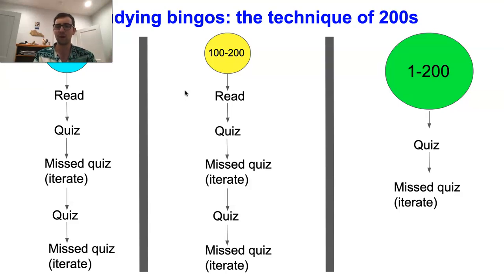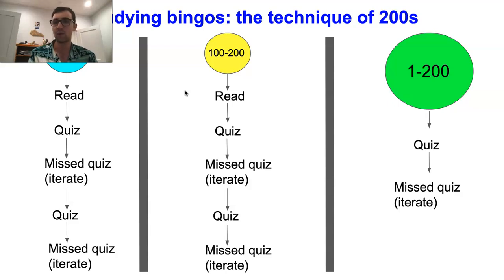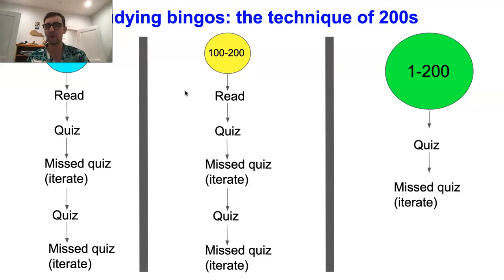I don't recommend more than 200 words at once because trying to study more new words than this is just too much for your brain to take in at the same time, and you don't end up absorbing the words as well. If you try this and find that 200 at once is too much, it can very easily be scaled down to 100 words or even 50 words. Using the 200-word number, here is what I do.